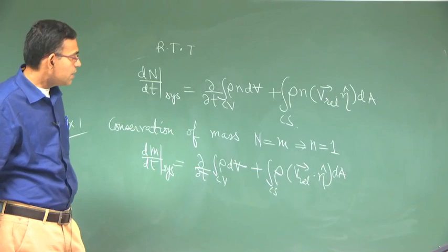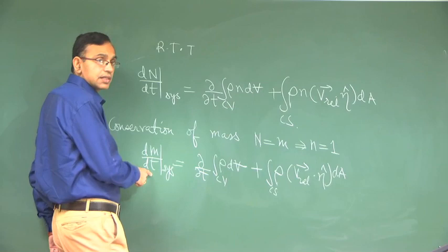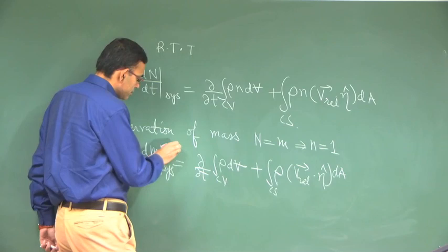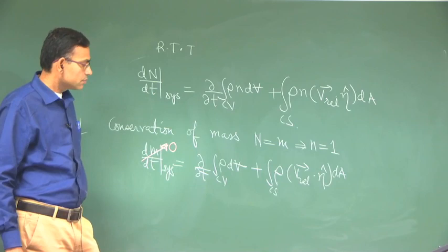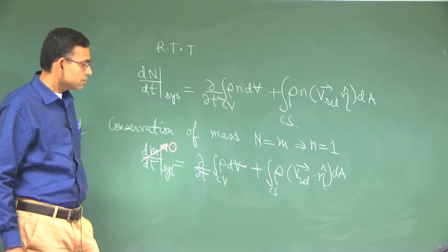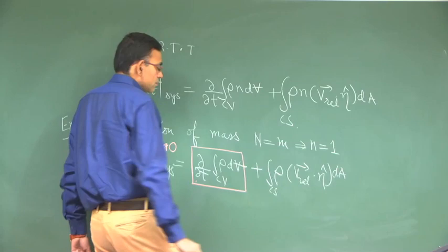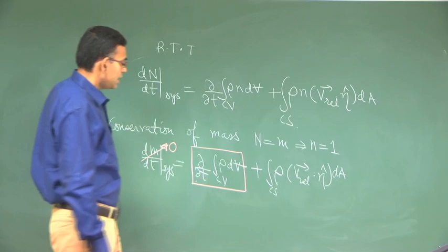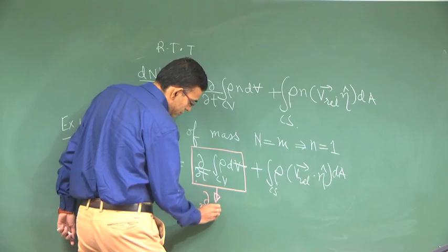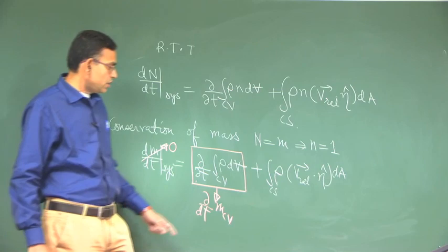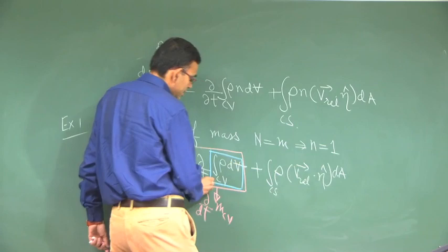Let us now write physically what these terms are. What is dm/dt of the system? By definition, a control mass system should have a fixed mass. Therefore, dm/dt of a control mass system has to be zero. The next term is the rate of change of mass within the control volume.